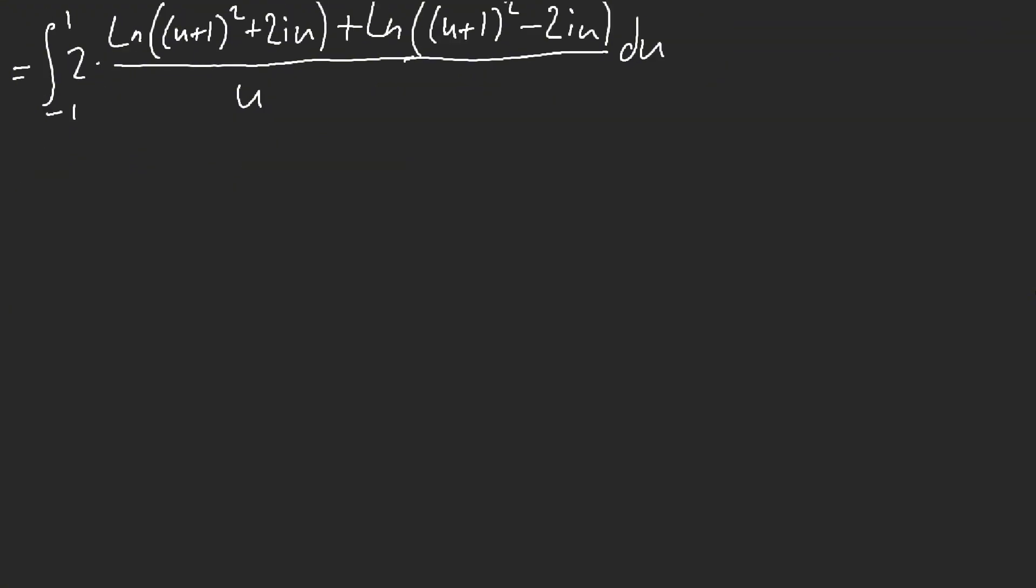So now what we have here is now we have 2. Do not forget the 2. That would kill us all. And 2 times all this over u. We now have u plus 1 squared plus 2iu minus ln. Oh, I'm sorry, no, plus u plus 1 squared minus 2iu. Now, here's the scary part. Let me go ahead and delete this. I want to construct my integral.